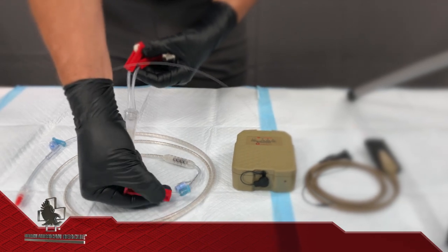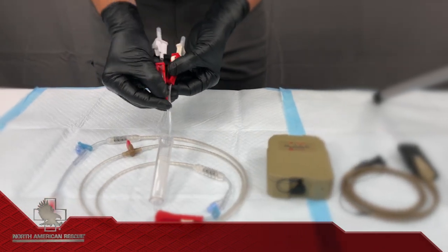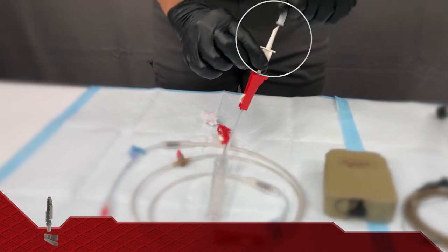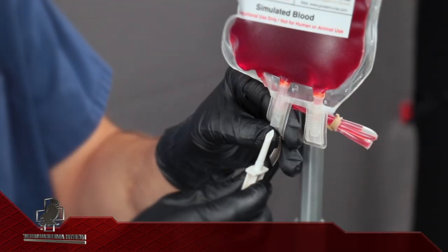Close all three roller clamps, remove one of the caps, and spike a bag of blood.